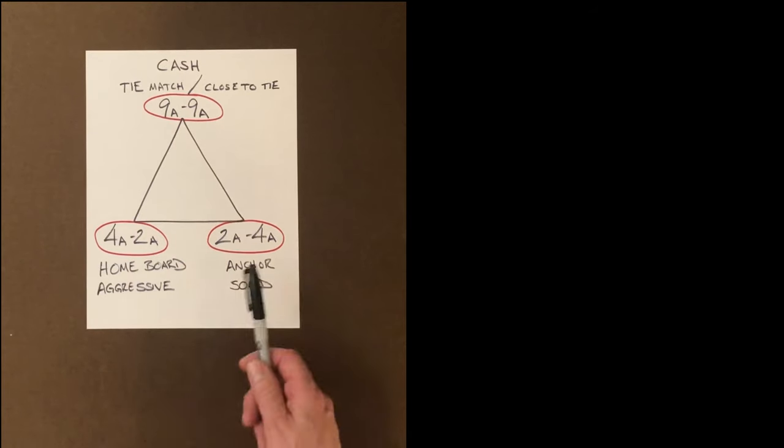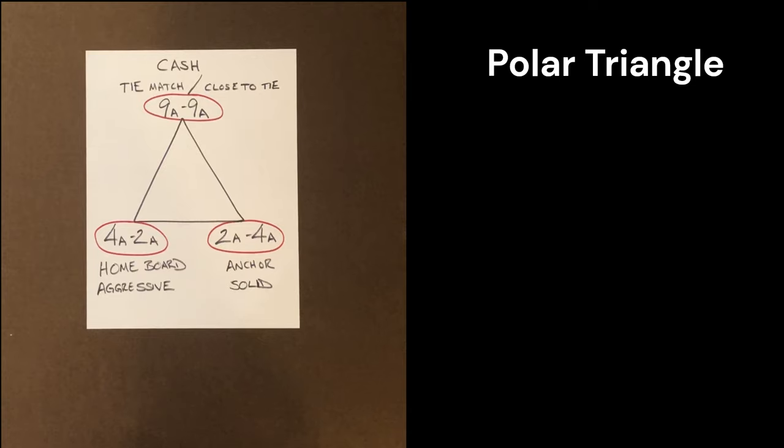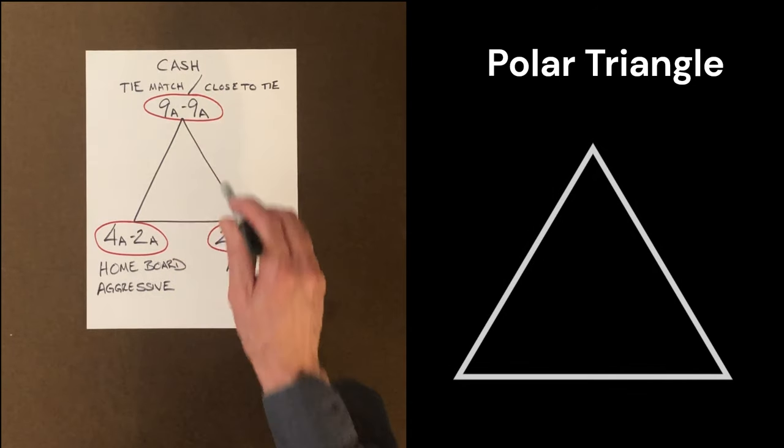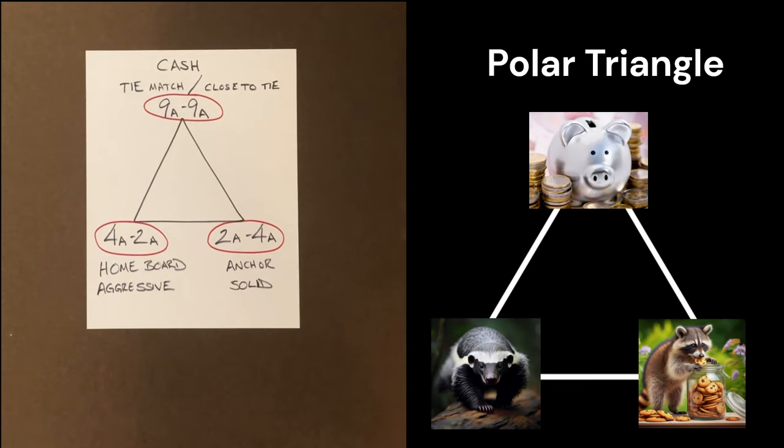Our examples of 4 away 2 away and 2 away 4 away. Hence, I'm going to put the name polar triangle. And if you can remember this triangle, and after watching several of these videos, you'll be able to form an opinion what your strategy should be at any match score that you run into.